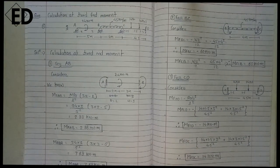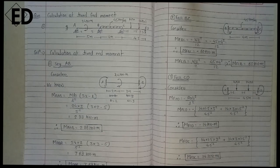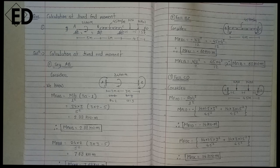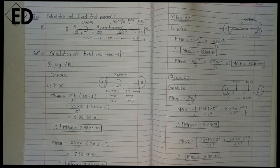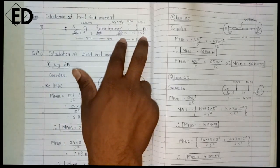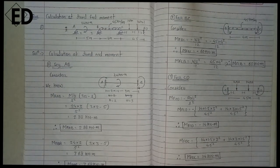Let's see how to calculate the fixed end moment of continuous beams. This is some of the typical types of questions which are asked in exams for calculating fixed end moment. For calculation, we will go in a stepwise manner. For calculation of fixed end moment of a beam, consider each span separately — here span AB, span BC, and span CD. Consider these three spans separately for calculating the fixed end moment.